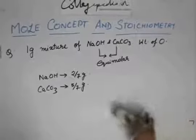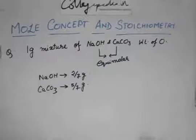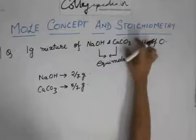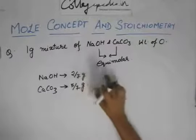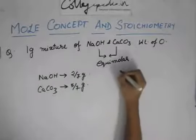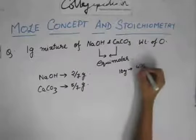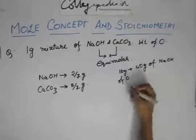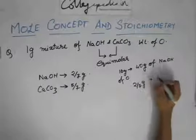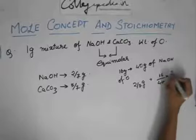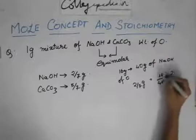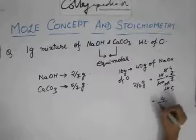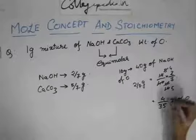Now, with these weights, find the weight of oxygen atoms in NaOH and in CaCO3, then add them. In NaOH, oxygen contributes 16 grams to every 40 grams of NaOH. So in 2/7 grams of NaOH, the oxygen = 16/40 × 2/7 = 4/35 grams of oxygen. But this is just in NaOH.